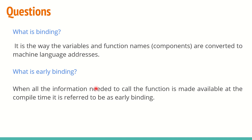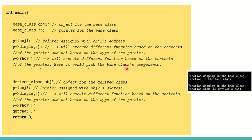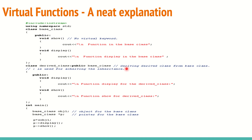What is binding? Binding is the process by which variable and function names — all components — are converted to machine language addresses. When all the information needed to call a function is available during compile time, it is called early binding.